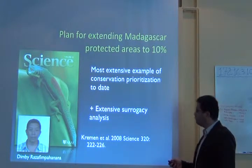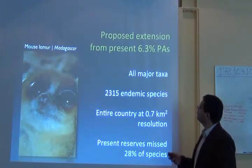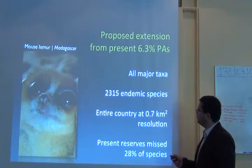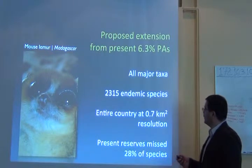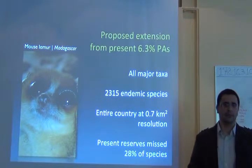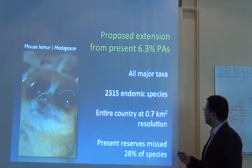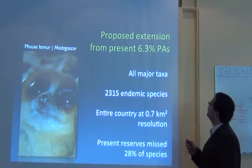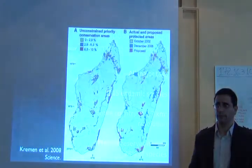The authors used a very extensive surrogacy analysis with many different taxa — all major taxa present there, including a lot of endemic species, invertebrates, and ants. They did this at very high resolution, less than one kilometer resolution, for all of Madagascar. The goal was to extend proposed conservation areas in Madagascar.